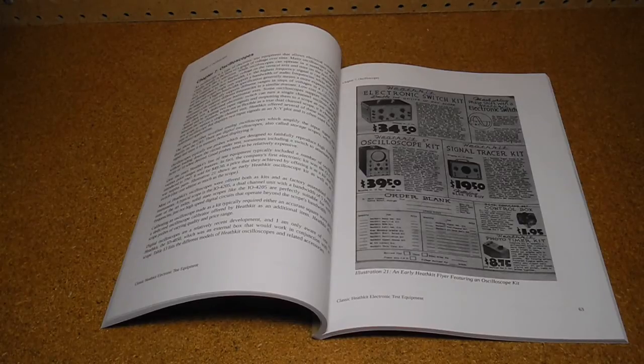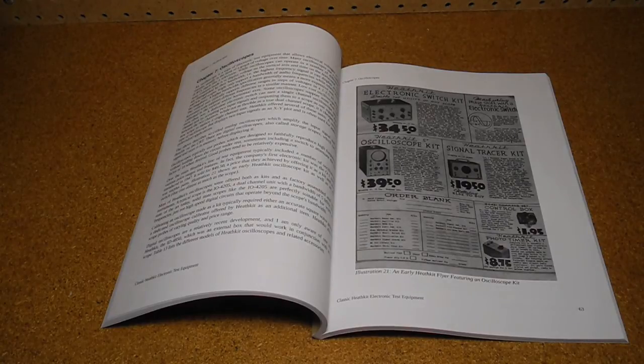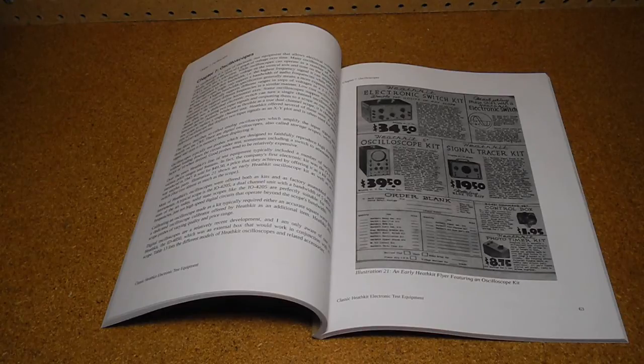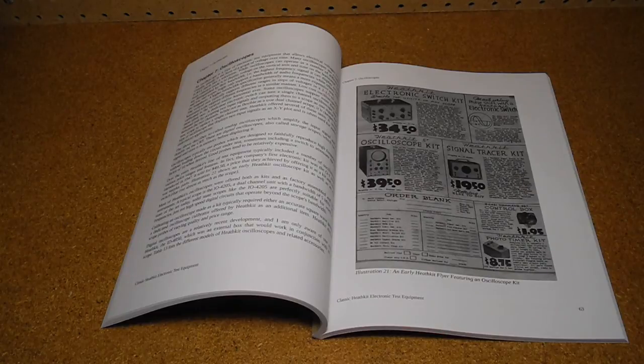The appendix provides a list of references and resources including books, websites, and suppliers of parts, manuals, and related products and services as well as a detailed product listing of every known model of test equipment produced by Heathkit.